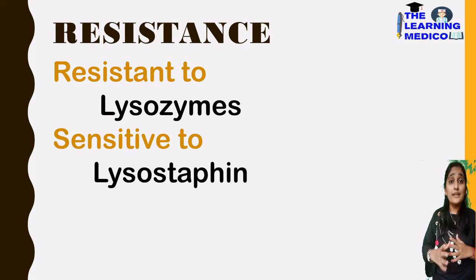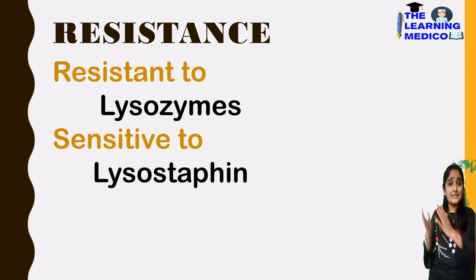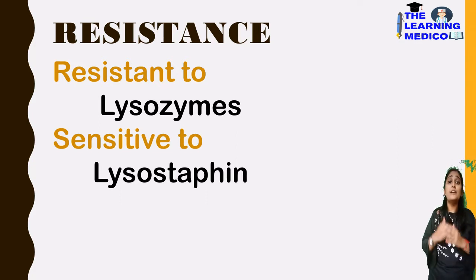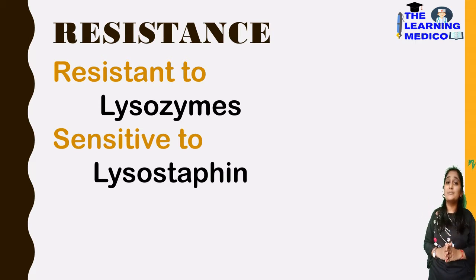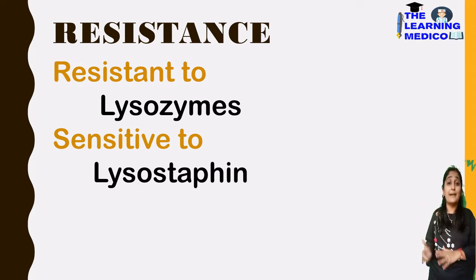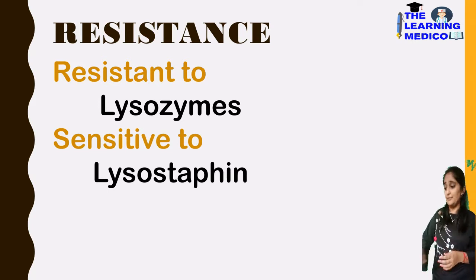They are aerobic and facultative anaerobes. Aerobes means they need oxygen. However, when they encounter conditions where they don't get oxygen, they can behave as facultative anaerobes so that they can survive.